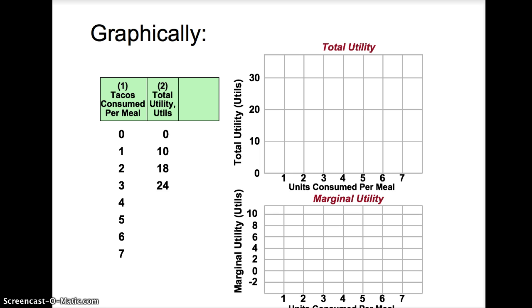Consuming one taco will result in ten utils of satisfaction. Two tacos will result in 18 utils, three tacos 24 utils, four tacos 28 utils, five tacos 30 utils, six tacos 30 utils, seven tacos 28 utils.